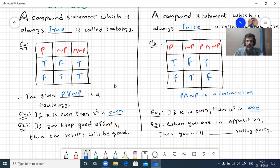For contradiction, we can tell like this: if you see any politics, when you are in opposition, then you will always contradict the works done by ruling party.